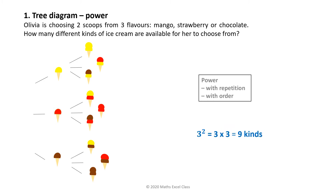We have three choices for the first scoop, and we have three choices again for the second scoop. So that is three squared, equals three times three, equals nine kinds of ice cream for Olivia to choose from.